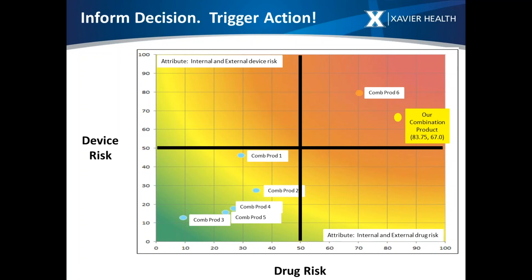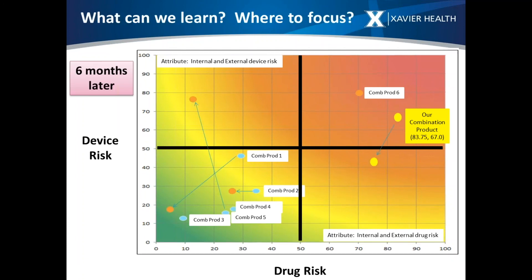We want to inform decisions and trigger action, so divide the heat map into quadrants and focus attention on the upper right-hand quadrant to see what's going on with those products. Looking at this over time — say six months later — you'll see shifts in some cases and stability in others. From a senior-level decision process, you want to understand what's going on with high-risk products or products that have moved into a higher risk category.